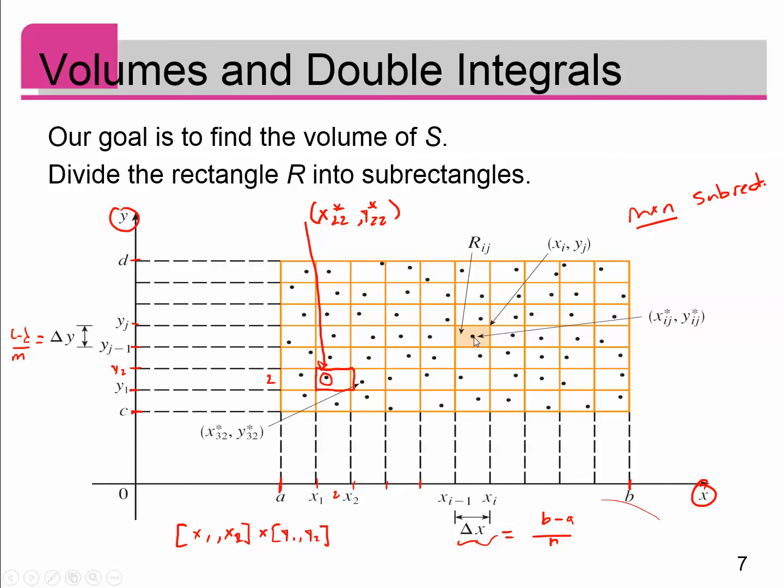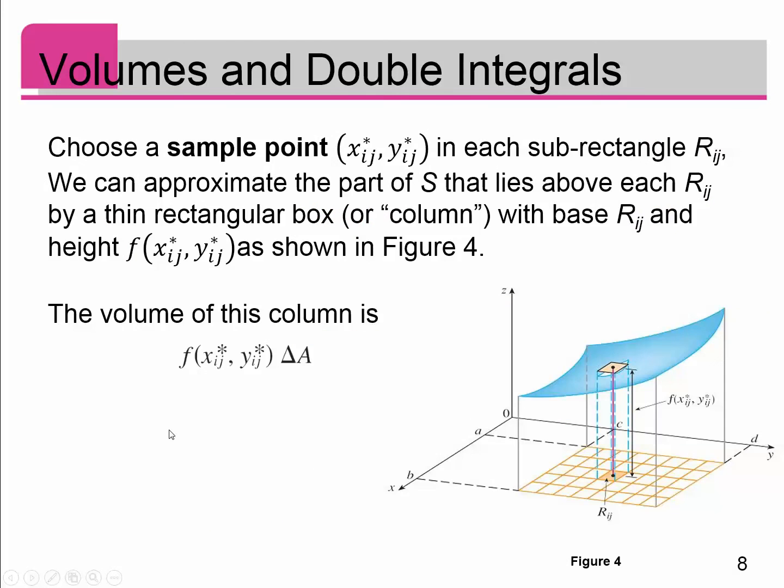Then what I want to do is I want to evaluate this function, the original function f(x, y), at each one of those points. Now, why am I going to do that? Well, look at this picture down here. So here's all of my subrectangles. There's the R_{ij} subrectangle. My sample point is (x_{ij}^*, y_{ij}^*). If I plug that into the function, that's this height of the surface.